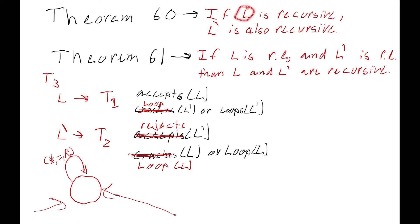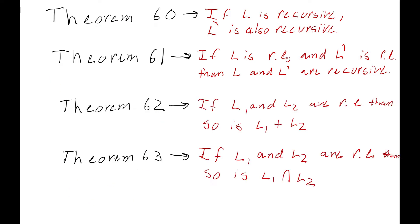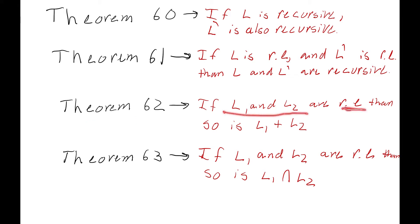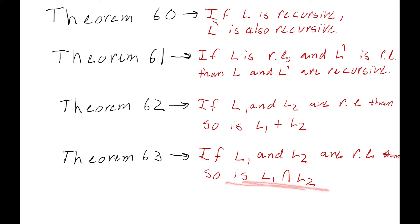Turing machine 3 accepts all the words in L and rejects all the words in L complement. Thus L must be recursive. And since L is recursive, we also know that L prime is recursive because of Theorem 60. There are two other theorems: if we have two languages that are recursively enumerable, their union is also recursively enumerable, and so is their intersection. This basically boils down to the same idea of running two Turing machines at the same time.